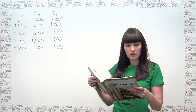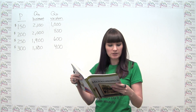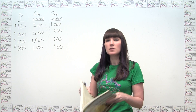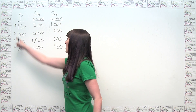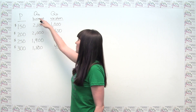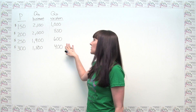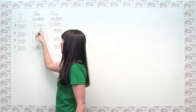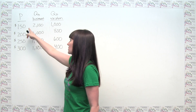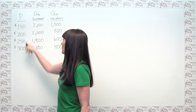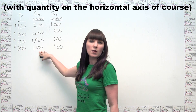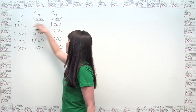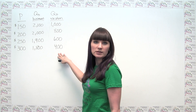The problem starts by saying: suppose that business travelers and vacationers have the following demand for airline tickets from New York to Boston. It gives demand schedules for both business travelers and vacation travelers. You could plot a demand curve for business travelers by plotting these prices versus these quantities, and we could also make a demand curve for vacation travelers by plotting these prices versus these quantities.